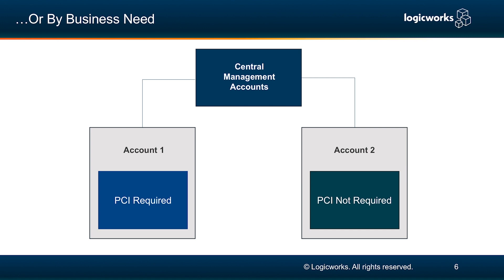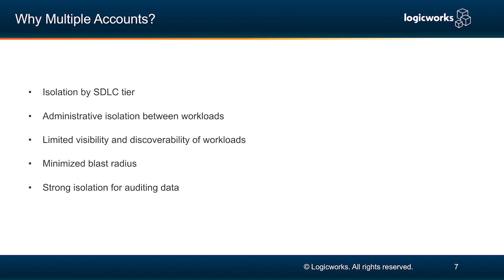You could also separate your accounts by business need. For example, if you have compliant data like PCI or HIPAA data for one application, and then you have other applications that don't have any PCI or HIPAA requirements, you could separate your accounts that way, so that during your audit you only have to audit that first account that has that HIPAA or PCI data. You could have administrative isolation between your workloads, where different engineers for different teams have different access permissions for different projects. There's limited visibility and discoverability of workloads and a minimized blast radius.